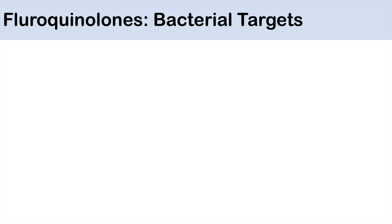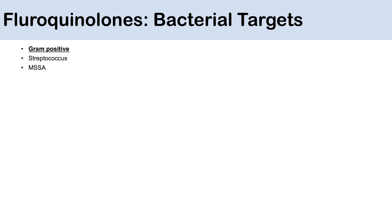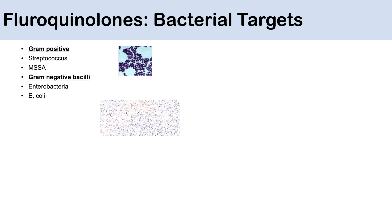Bacterial targets of fluoroquinolones include some gram-positives, including Streptococcus and methicillin-sensitive Staphylococcus aureus, or MSSA — so not MRSA, but MSSA. They are also very good at treating gram-negative bacilli, which include enterobacteria and E. coli.